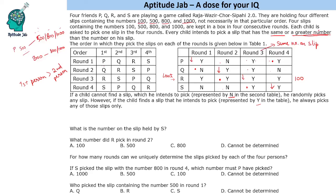In round 1, Q is not getting a chance (marked N). So P must have picked something greater than or equal to Q's number. If P picked 1000, Q has no choice left — this means Q has 1000. If Q had a lower number like 800, even if P picks 1000, Q would still be able to pick 800 and say yes. So Q always getting N here confirms Q has 1000, and P picked 1000 in round 1, causing Q to miss their desired slip.